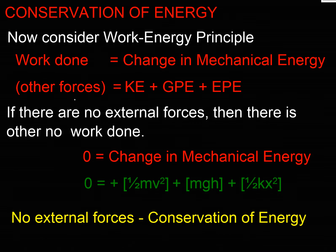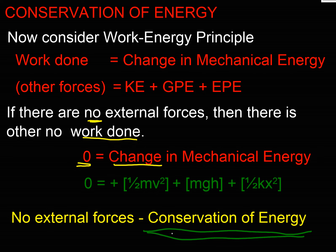Taking the point we've just reached, let's look at the situation where there are no external forces. If I've got a system where there's just a body moving in gravity with maybe some springs attached — say vibrating up and down in a physics experiment — and there are no external forces, then there can be no work done by those external forces. So zero on the left-hand side for work done must equal the change in mechanical energy. That's basically saying if mechanical energy is unchanged, we have what we call conservation of energy.